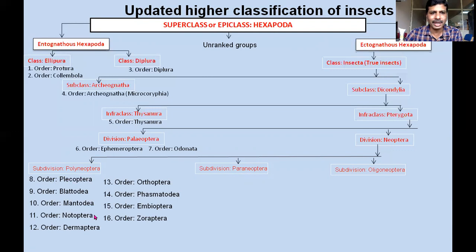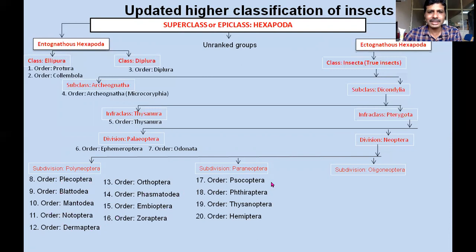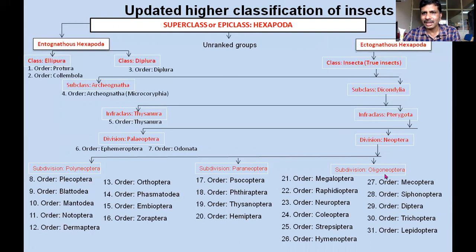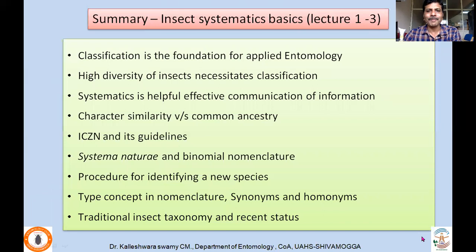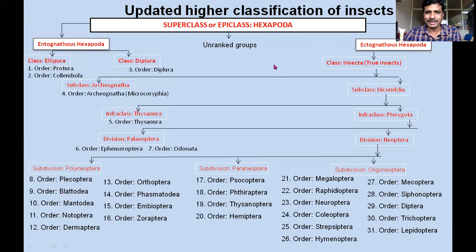Polyneoptera consists of Plecoptera, Blattodea, Mantodea, Notoptera — here Isoptera is not recognized, and instead of Grylloblattodea and Mantophasmatodea, the order Notoptera is recognized — Dermaptera, Orthoptera, Phasmatodea, Embioptera and Zoraptera. Paraneoptera, considered as Hemipteroid insect orders: Psocoptera, Phthiraptera — here instead of Mallophaga and Siphonculata, the single order Phthiraptera is recognized — Thysanoptera and Hemiptera. Under Oligoneoptera, the holometabolous insects: Megaloptera, Raphidioptera, Neuroptera, Coleoptera, Strepsiptera, Hymenoptera, Mecoptera, Siphonaptera, Diptera, Trichoptera and Lepidoptera are recognized. So in total, 31 orders are actually recognized under this updated classification.